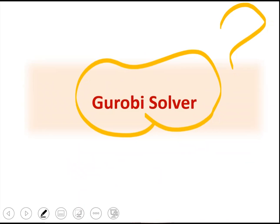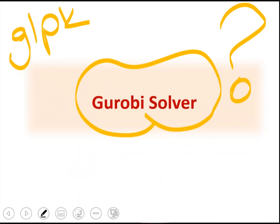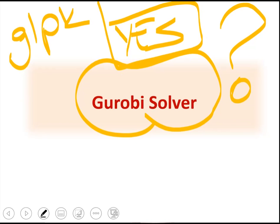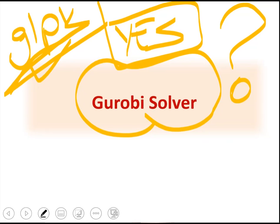Do we really need another solver if we have GLPK solver? And the answer is yes, because for many genome scale problems, GLPK is okay, it can function, but for a number of them, GLPK will give error. GLPK was not developed by a professional team, so in our research we prefer to use Gurobi solver.